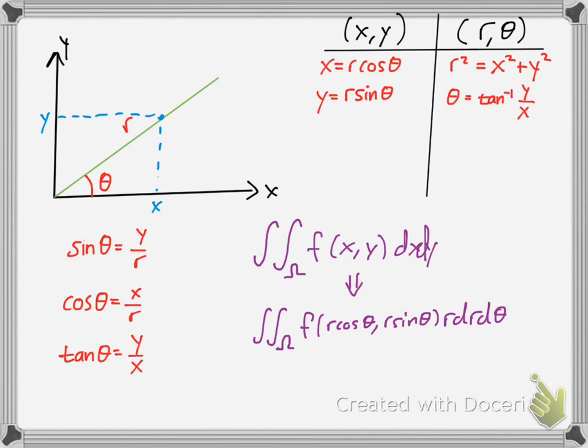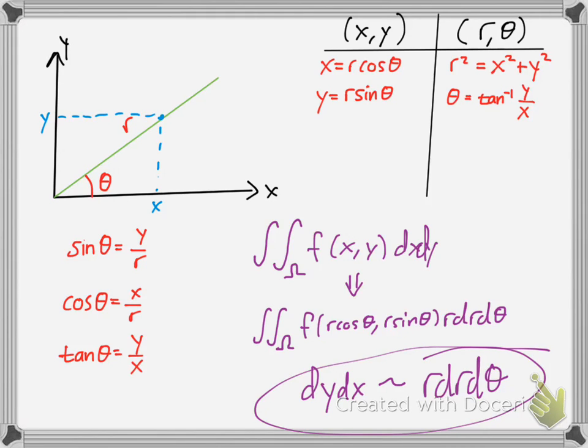The difference here I want to note: dx dy, or dy dx in this case, is equivalent to r dr d theta. Not dr d theta, but r dr d theta. There's a proof that goes behind that, but just know those are equivalent.